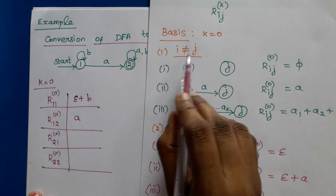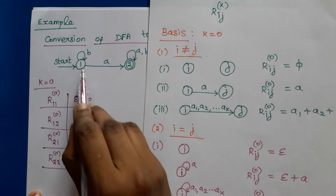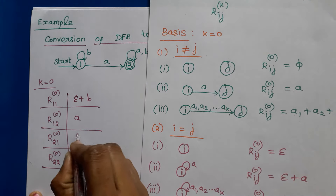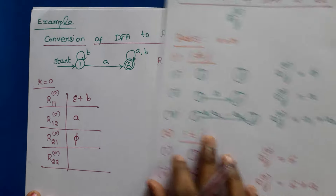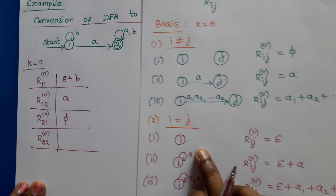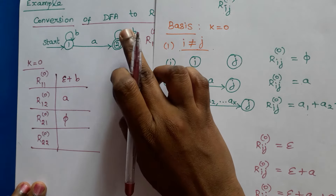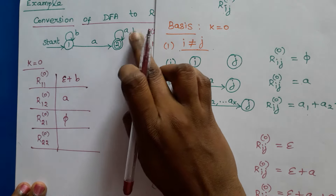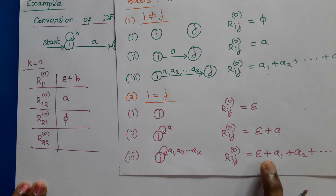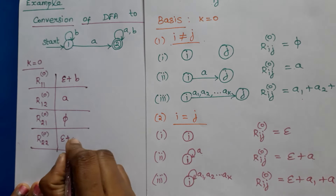For r21, i is 2 and j is 1, so i is not equal to j. From state 2 to state 1 there is no transition, so the regular expression is phi. For r22, i equals j equals 2, and there are two transitions — a and b — so the regular expression is epsilon plus a plus b.